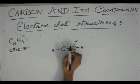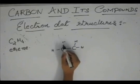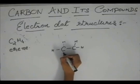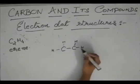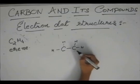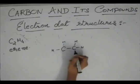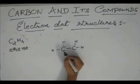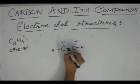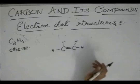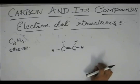See, carbon — this has only 3 bonds, so it has 1 electron, 1 valency which is not satisfied. Similarly, this carbon also has a valency which is not satisfied. So how do they satisfy this 4th valency? They make a double bond over here.